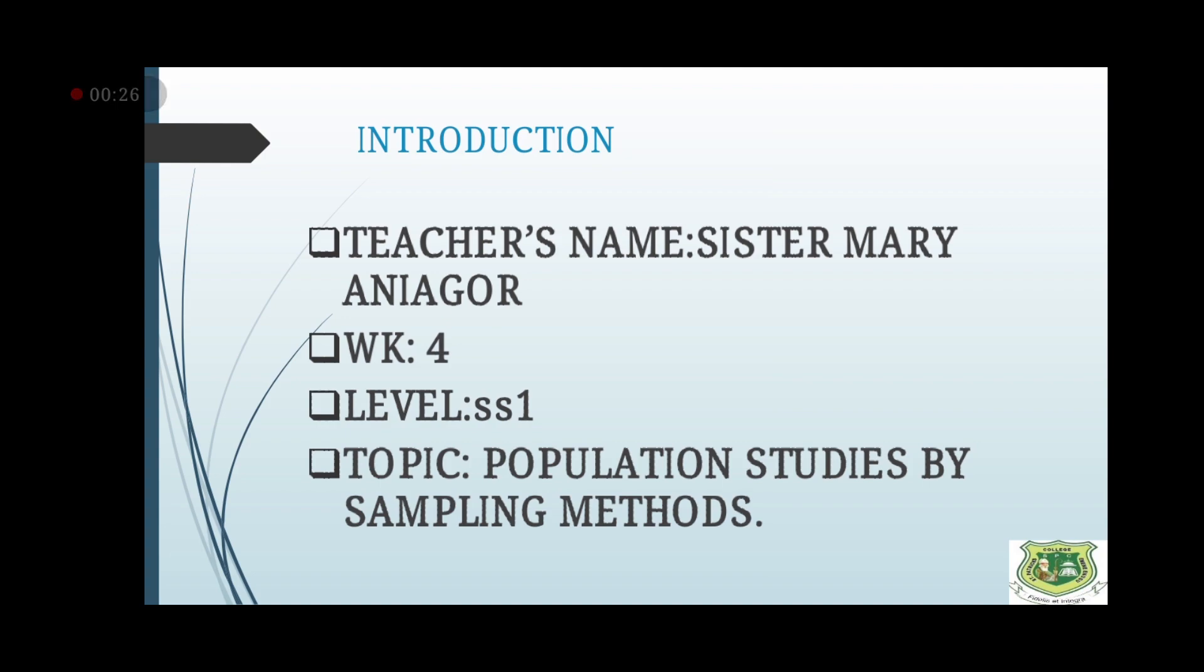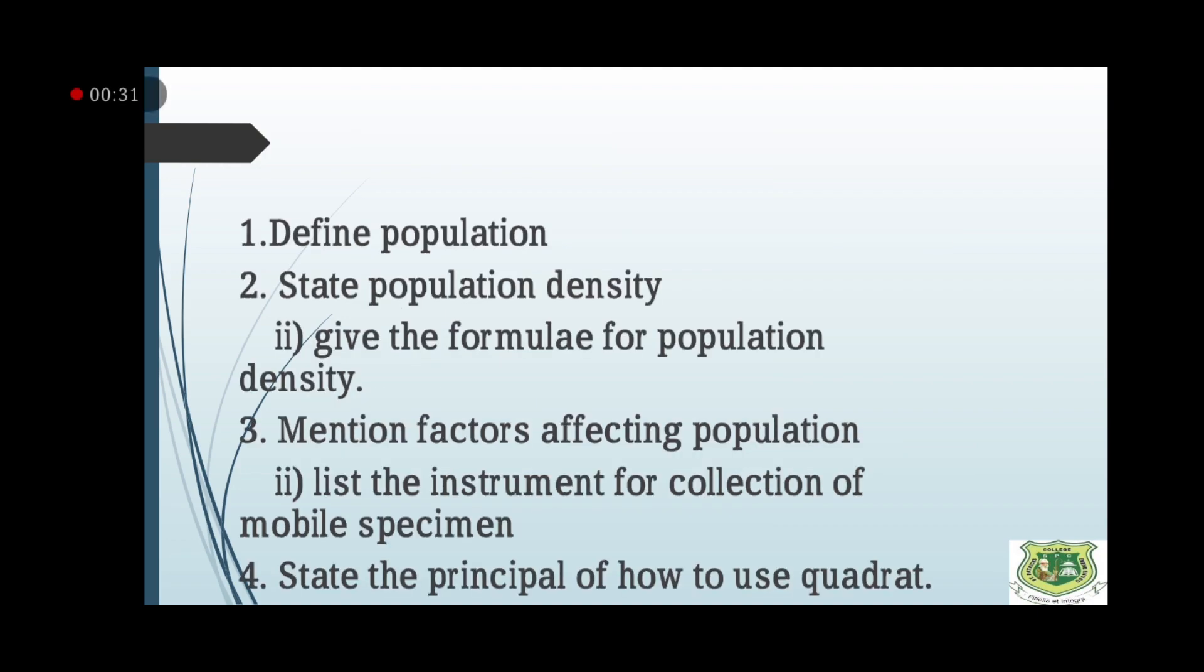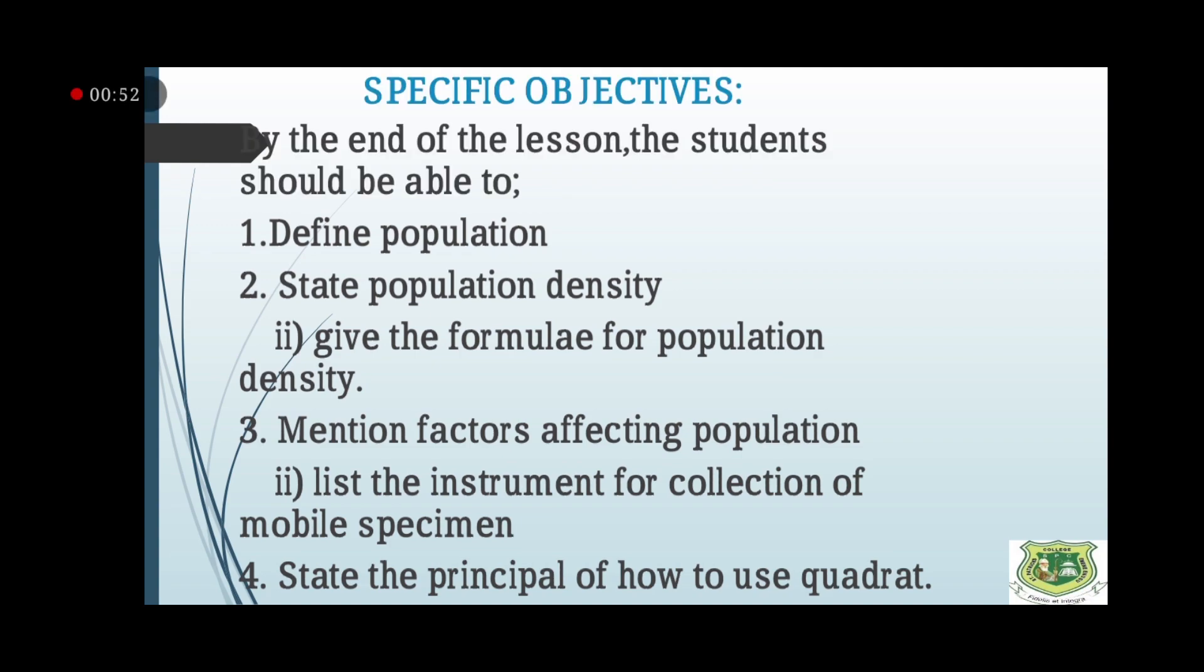We start by saying the definition of population. The commonest definition for population in ecology: a population is the total number of individuals of a given species in a habitat at a given time, or you can define it as a total number of organisms of the same species living together in a given area at a particular time. It must be a given species, at a given time, and in a particular place.